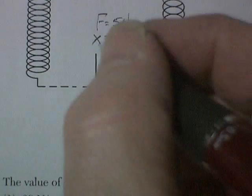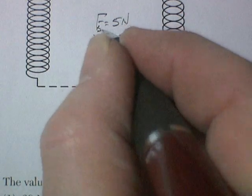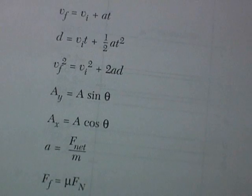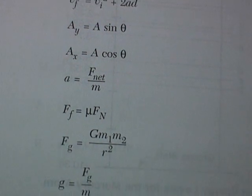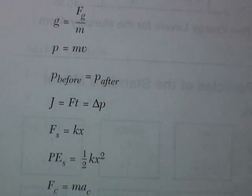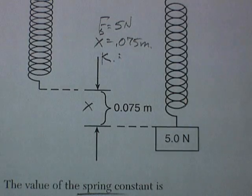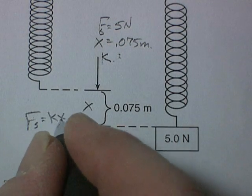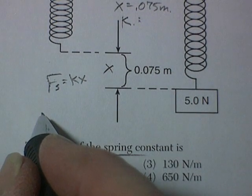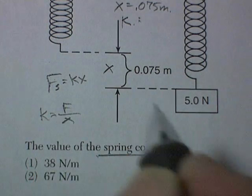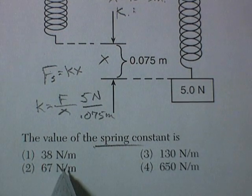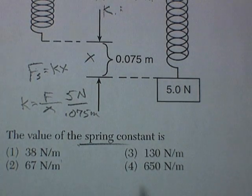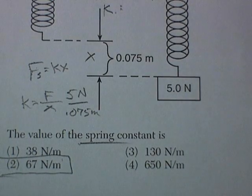The equation is F_spring = kx. Solving for k: k = F/x. So 5 newtons divided by 0.075 meters. Even if you forgot the equation, your units would tell you — newtons divided by meters. Using a calculator, you get approximately 67 N/m, which matches the answer. Page one is done.